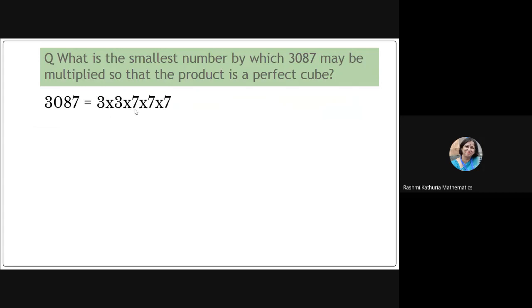I can see one triplet: 7 × 7 × 7. To make 3 × 3 a triplet, we have to multiply it by 3. So 3087 must be multiplied by 3 to get a perfect cube.